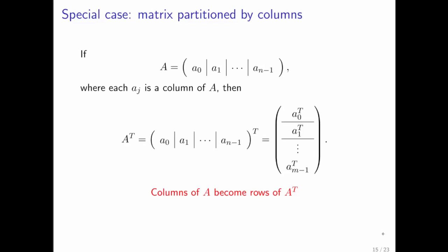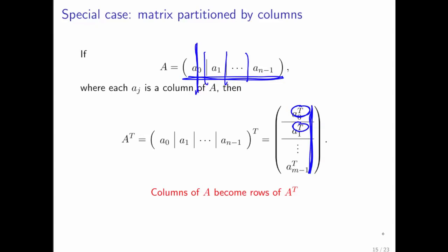Similarly, if you start by partitioning matrix A into columns and you transpose it, you need to take those symbols and make them into a column of symbols, but then put a transpose on each of those symbols as well. And lo and behold, a column of matrix A becomes a row of A transpose — and we saw that last week as well.